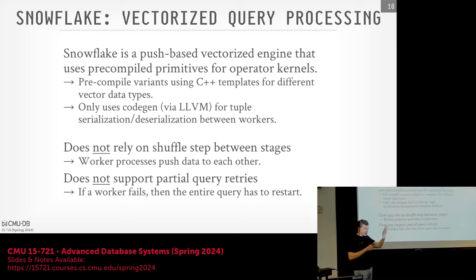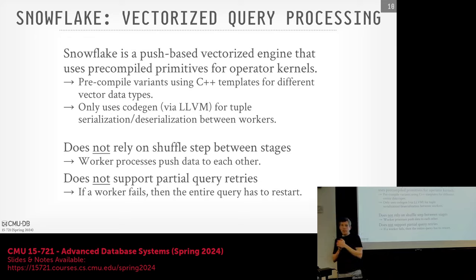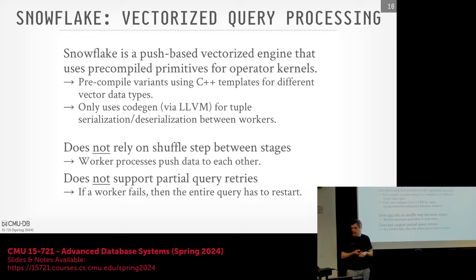How often do queries fail? Not that often — some way smaller fraction than one in ten. Because these queries run so fast and on a small number of machines, the likelihood of failure is quite low. Compare that to the MapReduce world where Hadoop was running jobs on thousands of cheap pizza-box machines — if a query ran for an hour, certainly one would go down. With a fast vectorized engine and fewer machines, failures are rare.